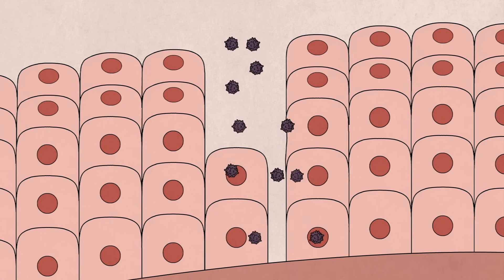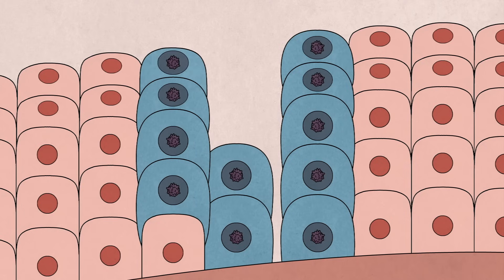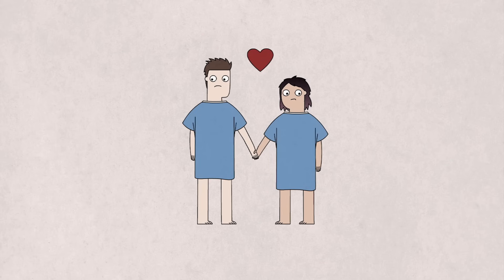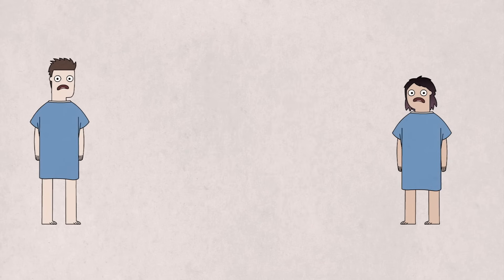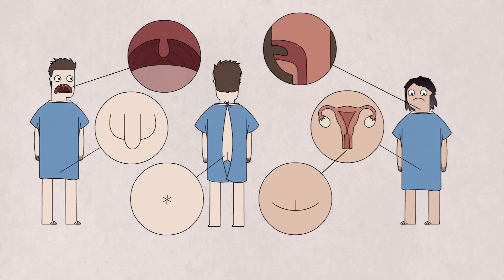HPV causes contact infections, which means the virus stays in the cells near the point of infection rather than spreading throughout the whole body. Since HPV is often transmitted through sexual activity, this usually means the cells of the vagina, vulva, penis, anus, mouth and throat.